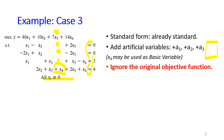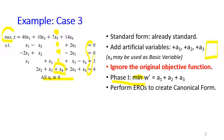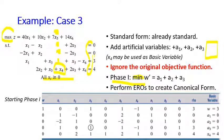As usual, we ignore the original objective function when starting phase one. Instead we use the phase one objective function, which is to minimize the sum of all artificial variables. Note that phase one is always a minimization problem, even if the original problem is a maximization. We then perform row operations to create a canonical form table, and using this BFS we are ready to start the simplex method.